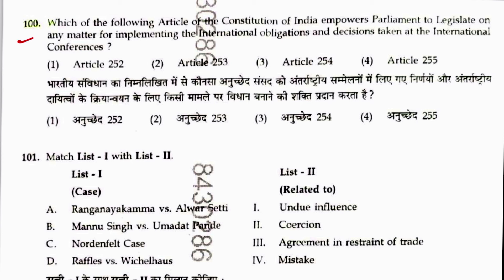Question 100: Which article of the Constitution of India empowers Parliament to legislate on any matter for implementing international obligations and decisions taken at international conferences? That is Article 253. Answer is 2. Very easy question.